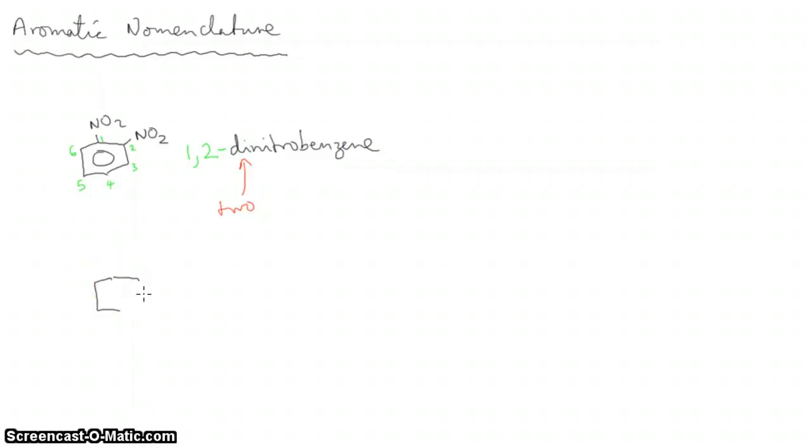Something like this. So we've got a nitro group there and a nitro group there. Again, numbering them, trying to put the lowest numbers possible. Well, that would be, again, numbering clockwise direction like that. That would be 1,3-dinitro, two nitro groups on a benzene ring.